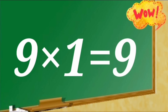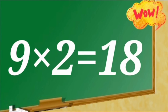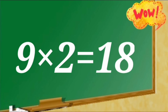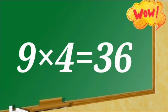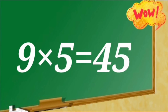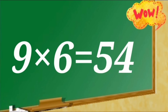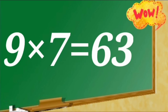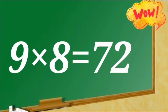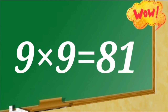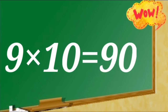Table of 9. 9 ones are 9, 9 twos are 18, 9 threes are 27, 9 fours are 36, 9 fives are 45, 9 sixes are 54, 9 sevens are 63, 9 eights are 72, 9 nines are 81, 9 tens are 90.